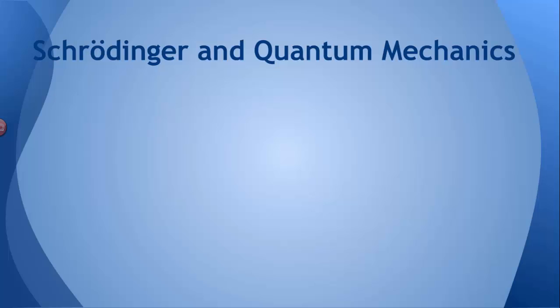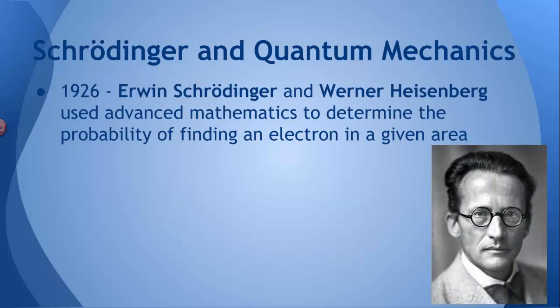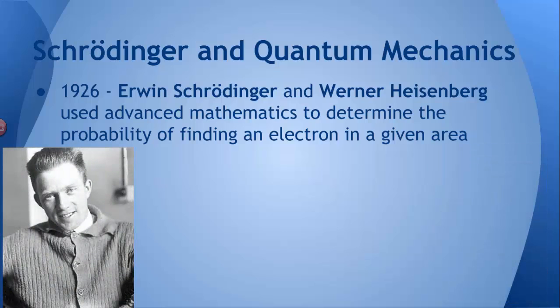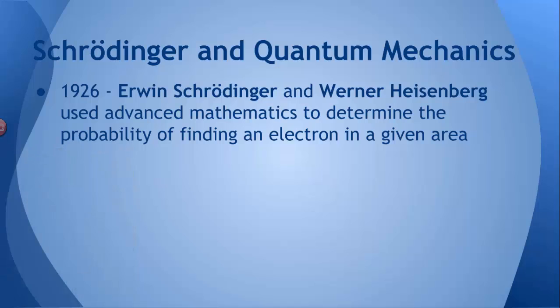Well, fortunately, there were a couple of scientists working on that very issue. Schrödinger, Erwin Schrödinger, was the first and primary participant in this area. He and a scientist by the name of Werner Heisenberg used much more advanced mathematics than Bohr was using. Bohr was basically just using advanced algebra. Schrödinger and Heisenberg had to use calculus.